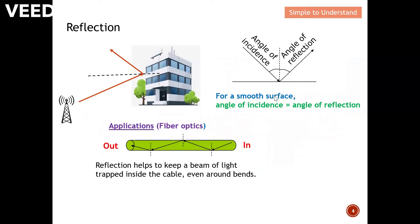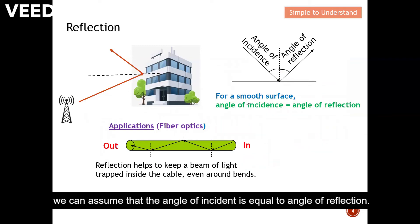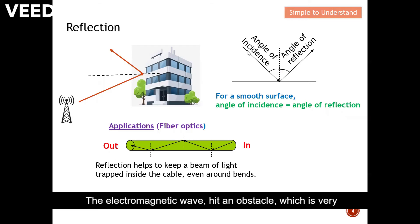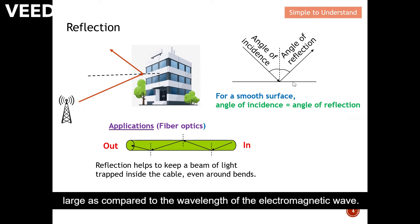For a smooth surface, we can assume that the angle of incidence is equal to the angle of reflection. So this is one of the assumptions we can make for a smooth surface. You can see here the electromagnetic wave hits an obstacle which is very large as compared to the wavelength of the electromagnetic wave.